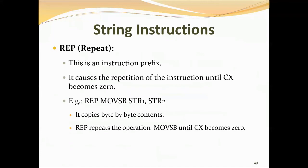Next is REP (repeat). This is an instruction prefix that causes repetition of the instruction until CX becomes 0. Example: REP MOVSB STR1, STR2 — it copies byte-by-byte contents, repeating MOVSB until CX becomes 0. REP is a prefix used before MOVS or STOS; it decrements CX and repeats the string instruction until CX becomes 0. The CX register contains the count of elements in the string. Its object code is F3.